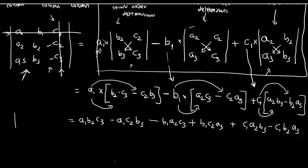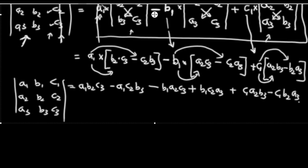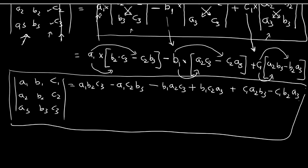This is the answer for the third order determinant with elements A1, B1, C1, A2, B2, C2, A3, B3, C3. To solve a third order determinant you use this formula, and now you know how it is derived.